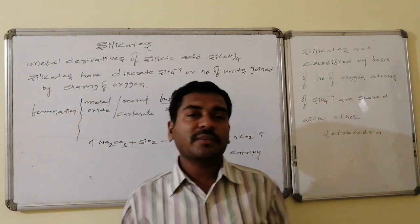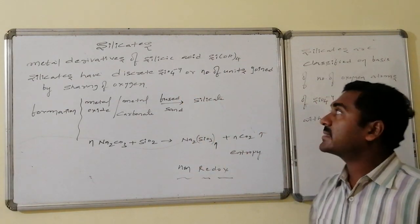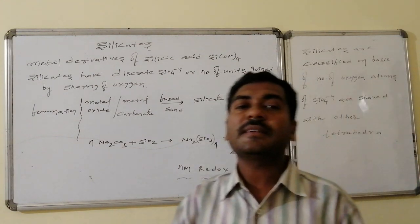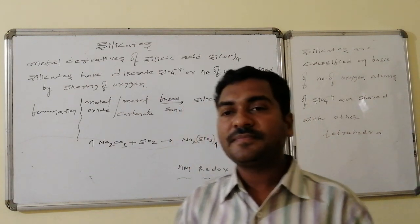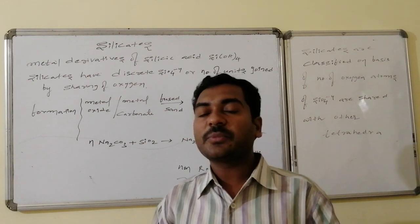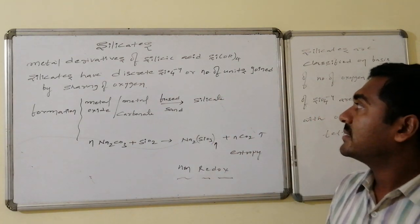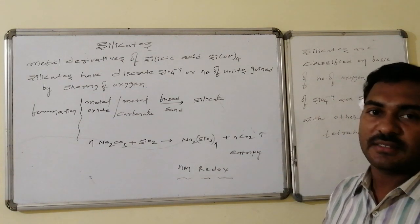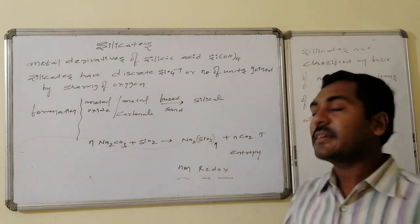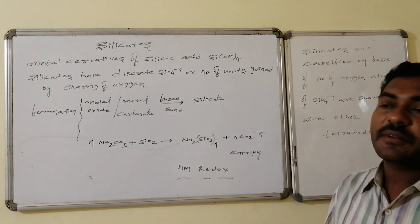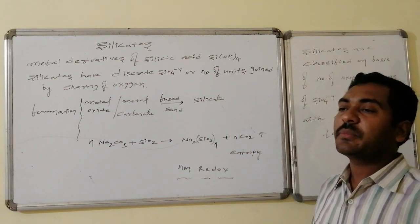Welcome, let us go to the next part of the carbon family, that is silicates. Silicates are metal derivatives of silicic acid — tetrahydroxy silicon, H4SiO4 — where some hydrogen atoms of the silicic acid are replaced by metals. As a result, it may be a discrete unit or it may share oxygen atoms with other tetrahedra. The metal derivatives of silicic acid are called silicates.